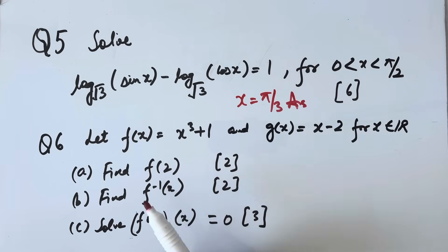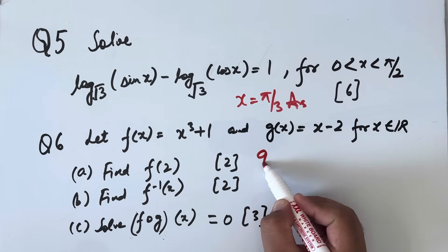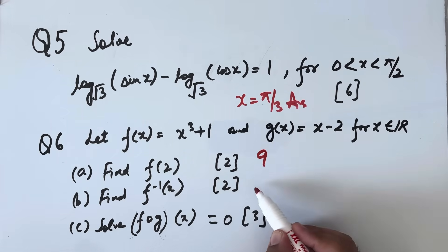Answer to part a, f(2) will be equal to 9. F inverse x will be equal to cube root of (x-1), and f(g(x)) = 0, value of x will be 1.